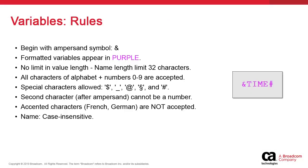For variables, the rules are simple. Variables always start with the ampersand symbol. When formatted, they appear in purple and have no limit in length. All alphabetical characters and numbers are accepted. Certain special characters are also accepted, and we have listed them here. The second character after the ampersand cannot be a number. Accented characters are not accepted. Finally, variable names are not case sensitive, and can take a variety of formats, which we'll show in some examples later.